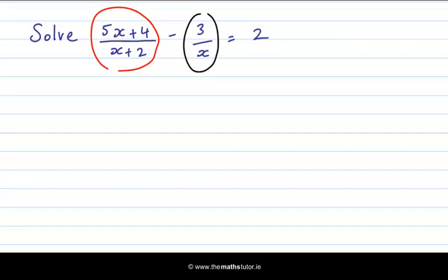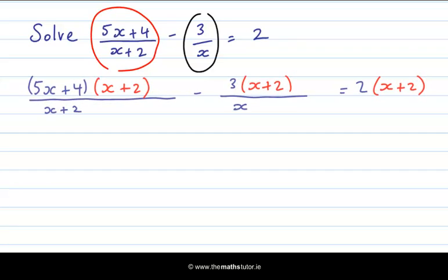First, we are going to multiply both sides by x plus 2. Here we have multiplied both sides of the equation by x plus 2. The reason we have done that is so that we can cancel out these denominators. So the first denominator is gone.